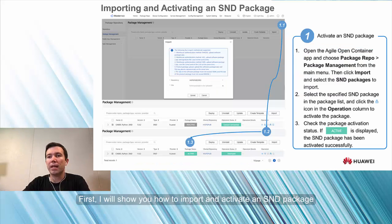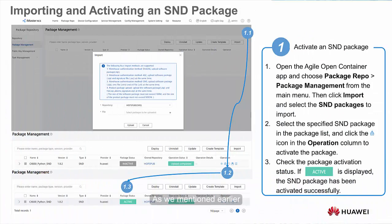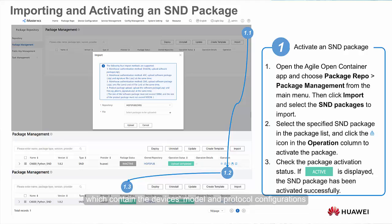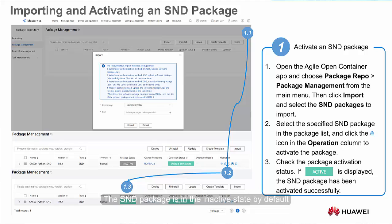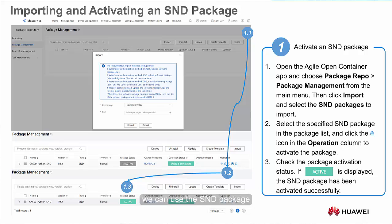First, I will show you how to import and activate an SND package. As mentioned earlier, the AOC manages devices of different vendors based on SND packages, which contain the device's model and protocol configurations. To import and activate an SND package in the AOC, we access the Software Package Management page and import the SND package to the system. The SND package is in the inactive state by default, so we need to activate it. We click the Activate button in the Operation column. After activation is complete, we can use the SND package.